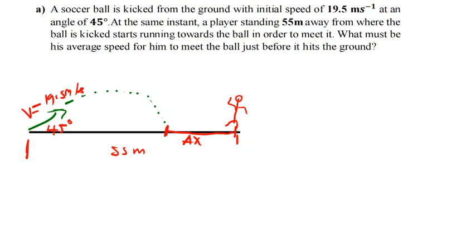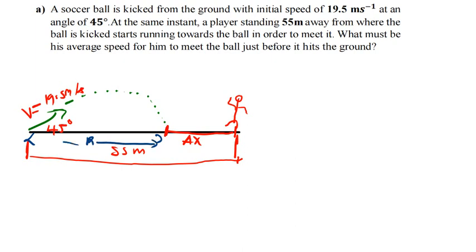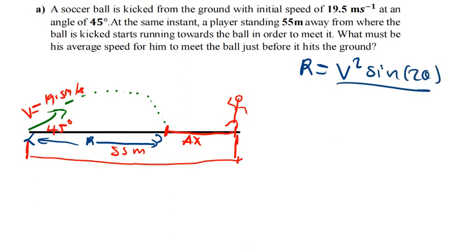The total distance from the person's starting point is 55 meters. We need to find the range of the projectile trajectory. Once we find the range, we can find delta-X, since the total distance is 55 meters. Also, for the person to reach the ball just before it hits the ground, the time must be the same for both. So first, let's find the range using the formula: Range = V² × sin(2θ) / g. With V = 19.5 m/s and θ = 45°.